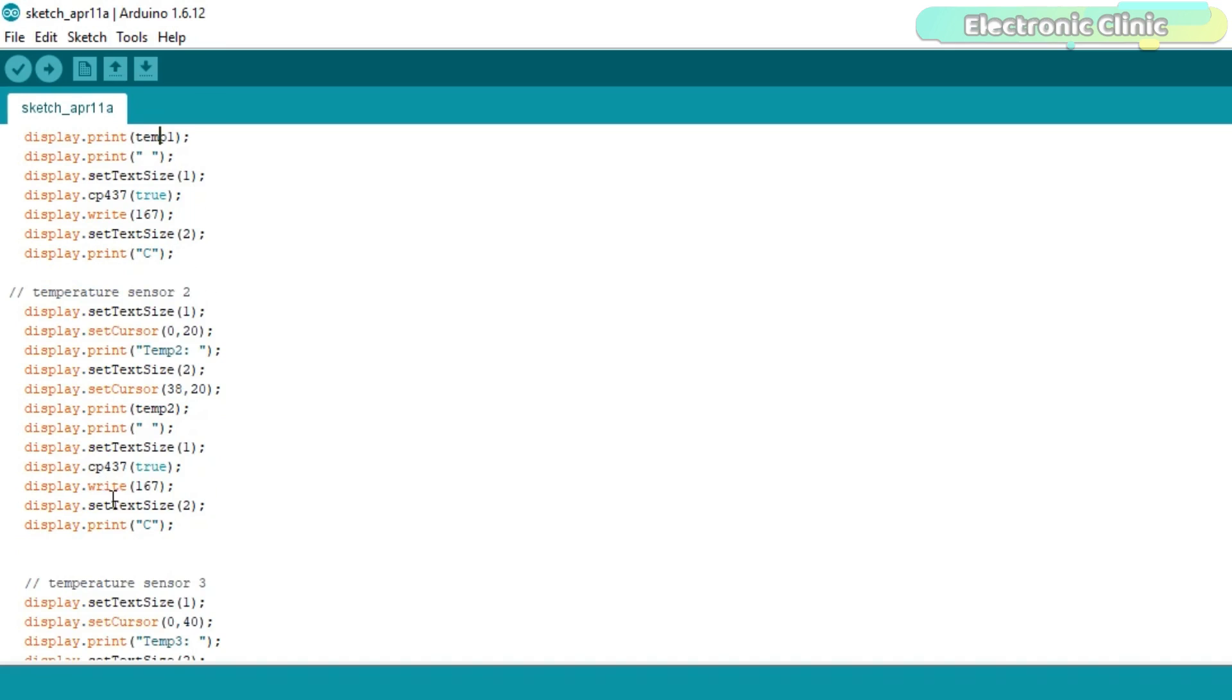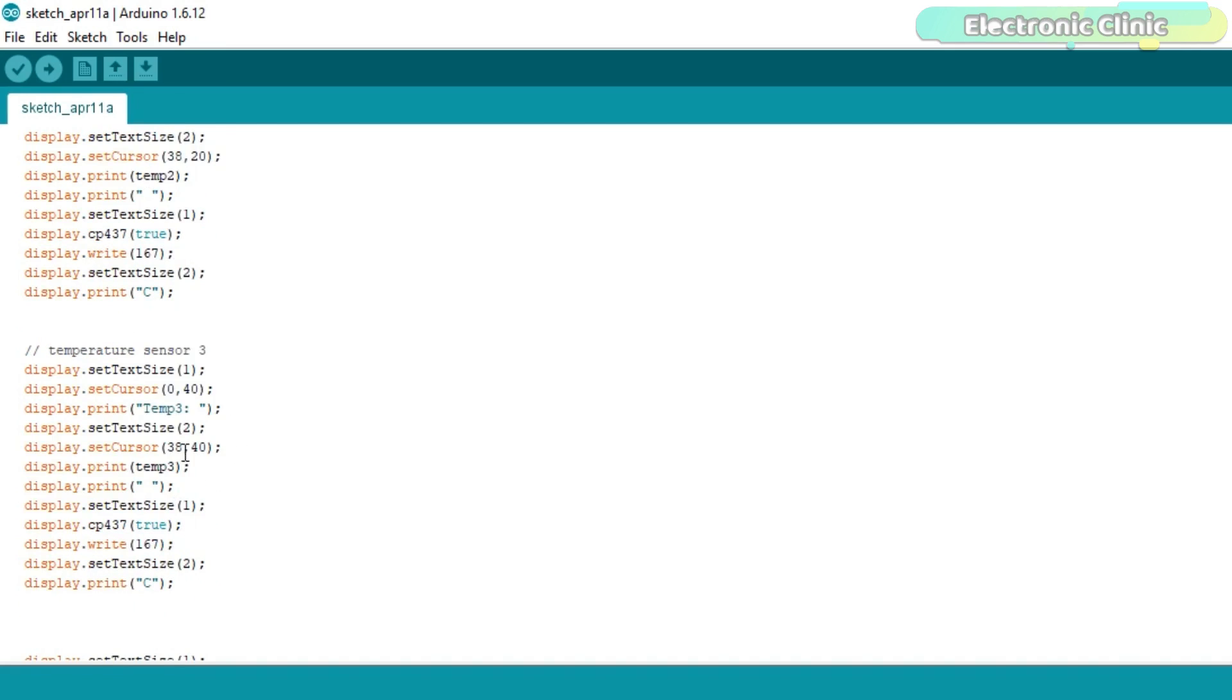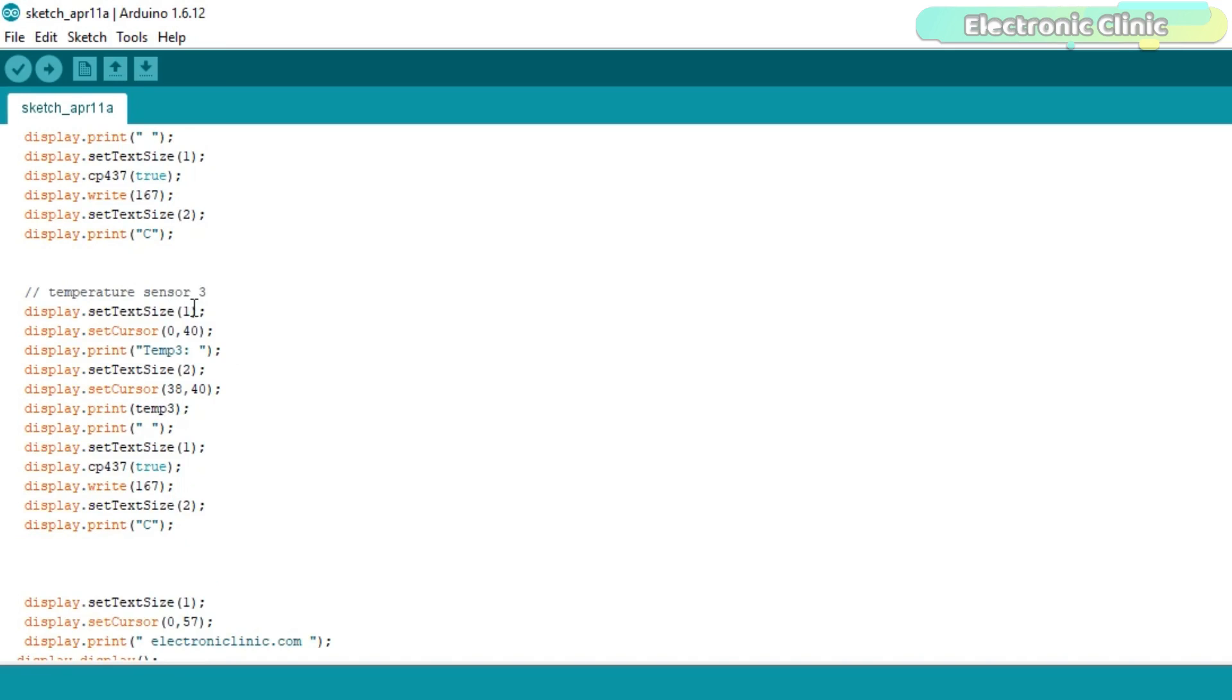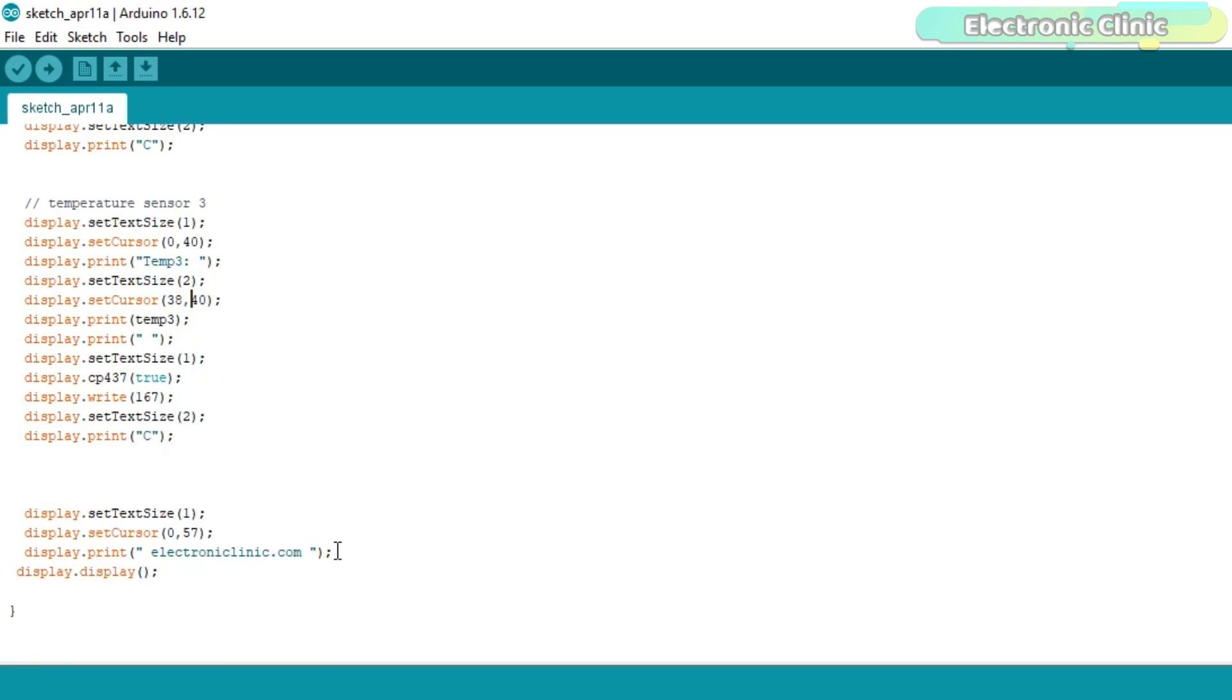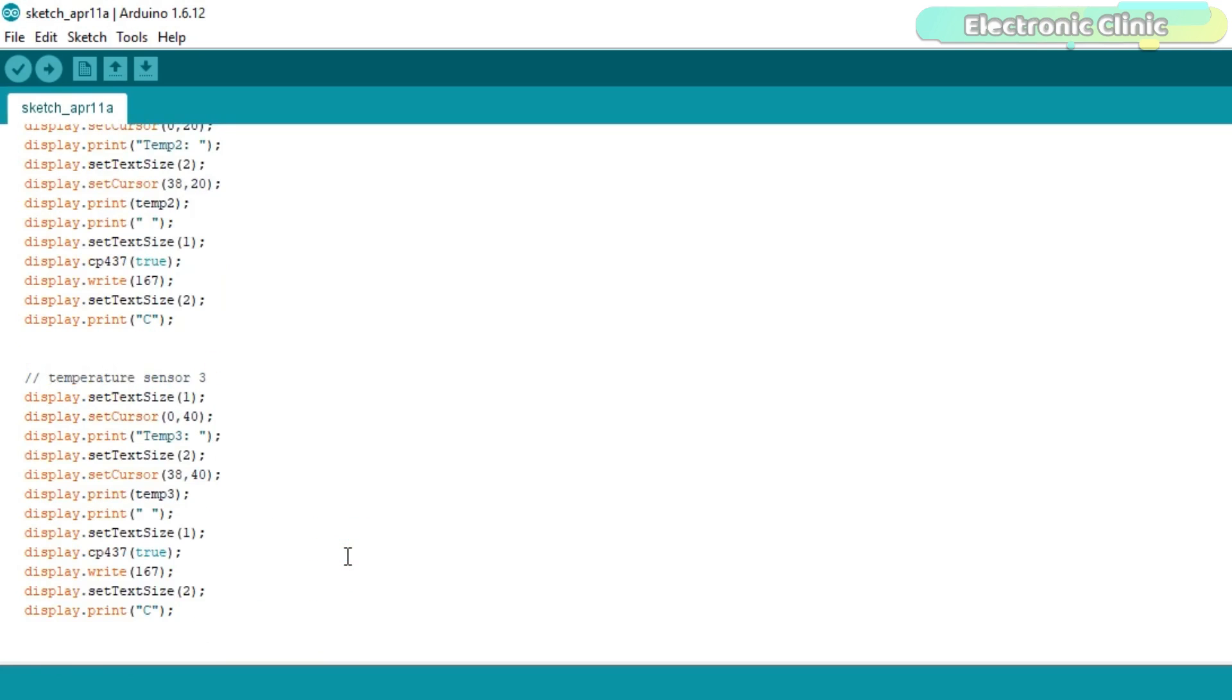As you can see, I am using the same set of instructions for sensor number 2 and sensor number 3 as well. The only difference is in the cursor position. Finally, at the end, I display electronicclinic.com. So, that's all about the programming.